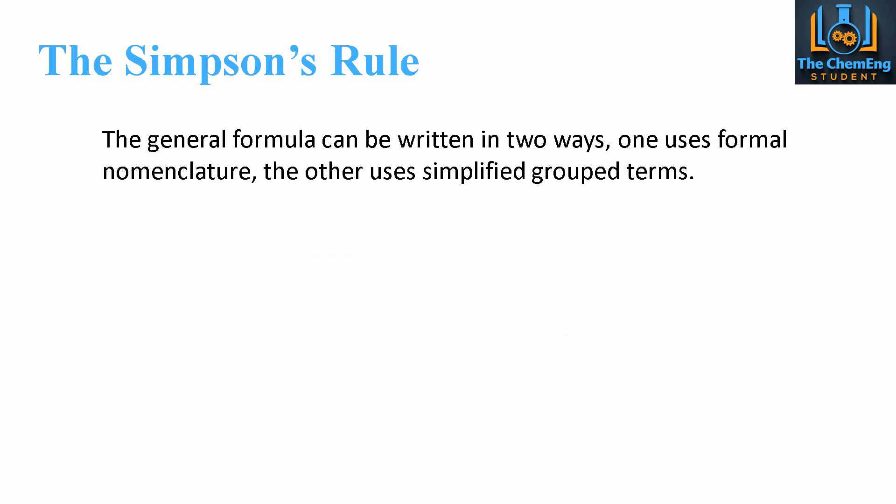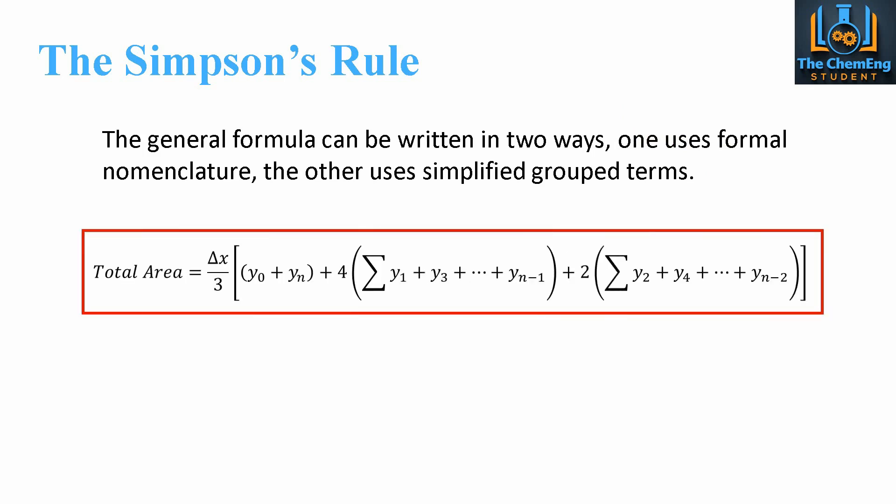Now, the formula for the Simpsons rule looks slightly more complicated. But there is one way that we can express it using formal nomenclature. But then we have another simplified method whereby we can just group the terms and explain what they are. Now, the latter is probably easier for those of you that aren't really familiar with the Simpsons rule. But the more formal nomenclature is given by this equation here. So, we have still our delta x, but this time it's divided by three. So, the formula for delta x is exactly the same. Now, this is still the same. So, our y-naught and our y-n. This is the end terms. So, the first and the last value.